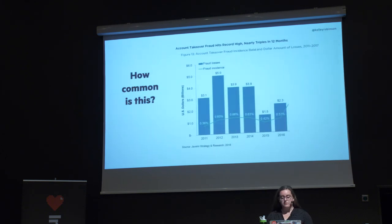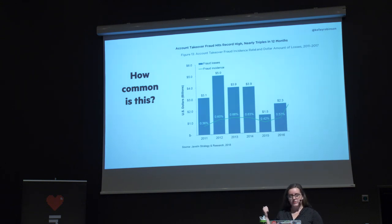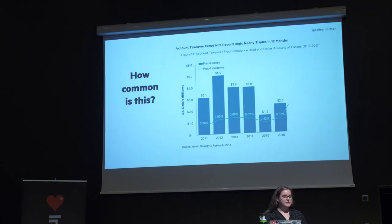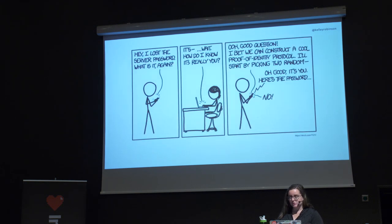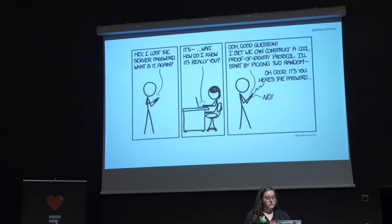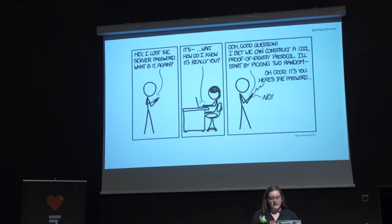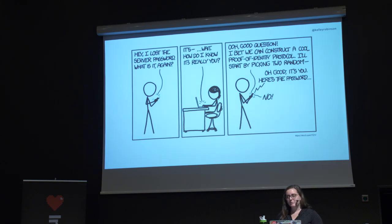When we talk about account takeovers and account fraud, it's a pretty common problem. It dropped off in 2015 when credit card chips were introduced, but I just read an article that says even with chip readers a lot of people are still swiping, and fraud is back up to $5.1 billion in 2017. This is a really big problem we're trying to prevent, and it's all happening because online identity is fallible. How we design those systems and establish trust is part of what we're going to walk through today.